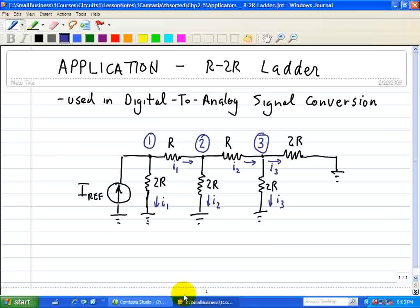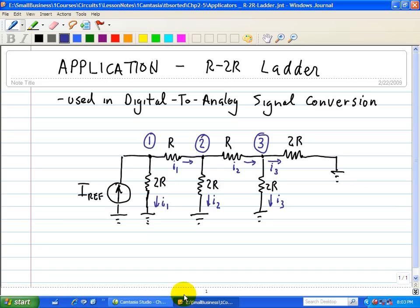The resistor ladder configuration shown here is one of the simplest and most inexpensive ways to perform digital-to-analog conversion using repetitive arrangements of precision resistor networks in a ladder-like configuration.